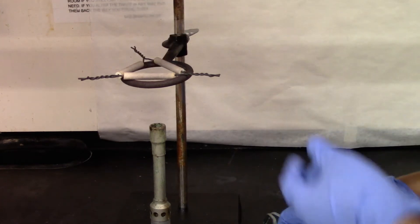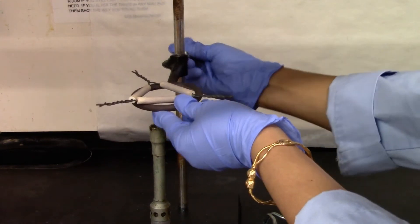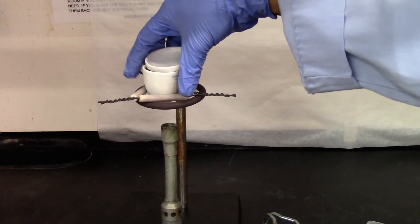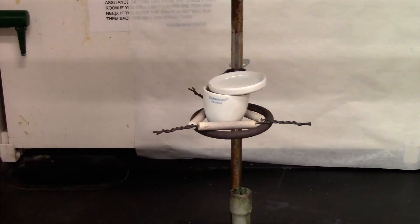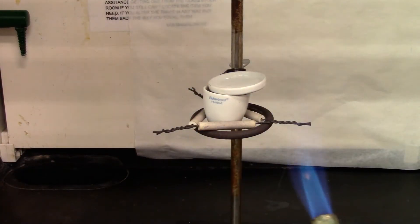I'm going to adjust the height of the ring clamp so the heating could be strong. I'm going to strike my burner. I'm going to adjust the height of the flame and then place it underneath.